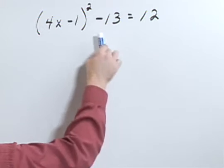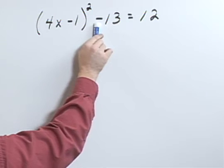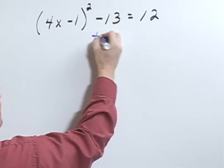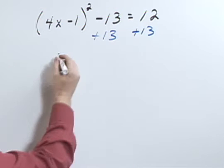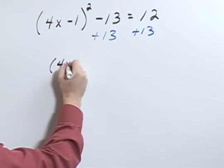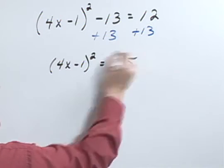What I want to first do is to get this quantity squared by itself, so I'm going to eliminate this minus 13. To do so, I'm going to add 13 to both sides. That's going to leave me with the quantity 4x minus 1 squared equals 25.